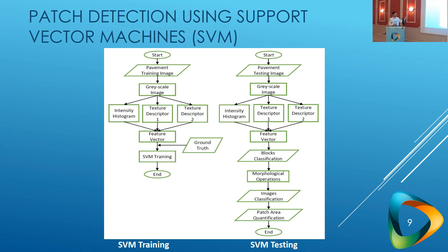This figure illustrates the process. On the left you can see the training stage and then the testing stage. We use the intensity histogram and texture descriptors for every block, along with ground truth to train the SVM. The testing process is similar, but at the end we perform block classification, morphological operations such as opening and closing, and then image classification and patch area quantification.